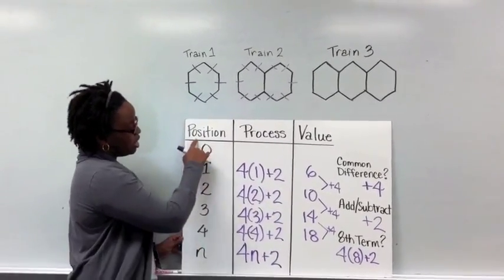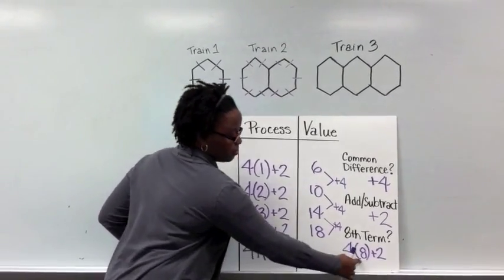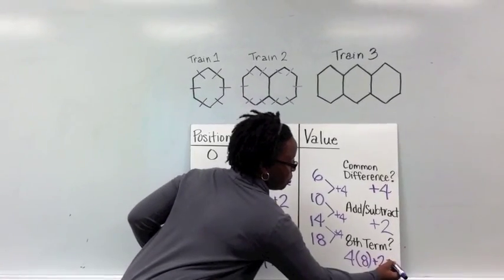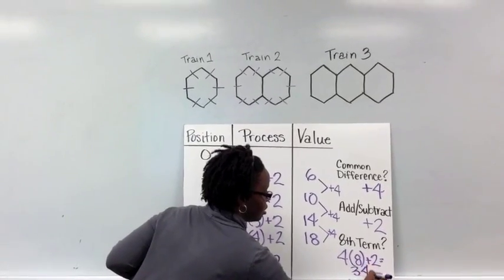All I've done is plug the position number of 8 in for my variable of n. So 4 times 8 is 32 plus 2 means that the perimeter of the 8th train would be 34.